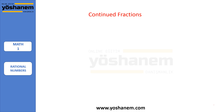A continued fraction is an expression where you have an integer — it doesn't have to start with an integer, but the fraction itself is an integer plus a fraction, and the denominator of that fraction is also a fraction. So an expression like this is called a continued fraction. One skill I want you to learn from this video is how to convert any continued fraction into a single fraction.